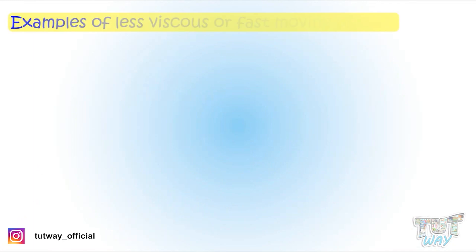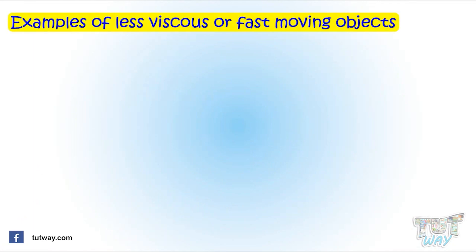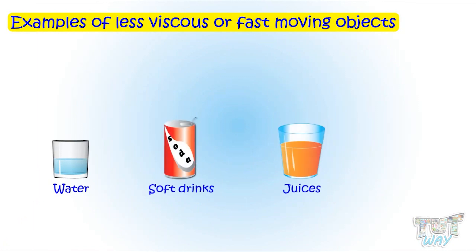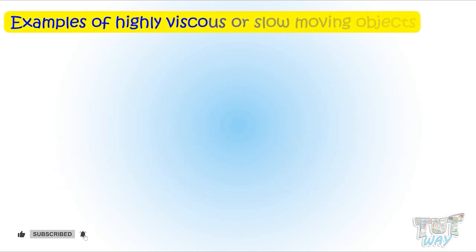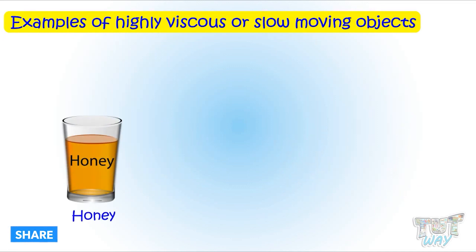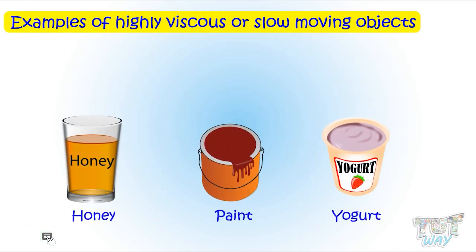Here are some examples of liquids having low viscosity: water, soft drinks, juices, and milk — all are fast-moving liquids. Examples of liquids having high viscosity include honey, paint, and yogurt — these are slow-moving liquids.